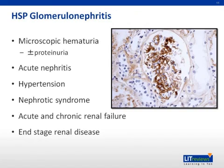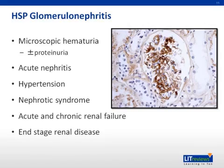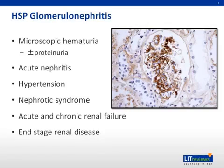The renal disease of HSP deserves special discussion, since it is probably the most significant determinant of long-term outcome. Renal disease occurs in up to 50% of children with HSP. Renal involvement may present with a wide spectrum of abnormalities, from asymptomatic protein or blood in the urine, to less common nephrotic syndrome, acute nephritic syndrome, hypertension, or renal failure.